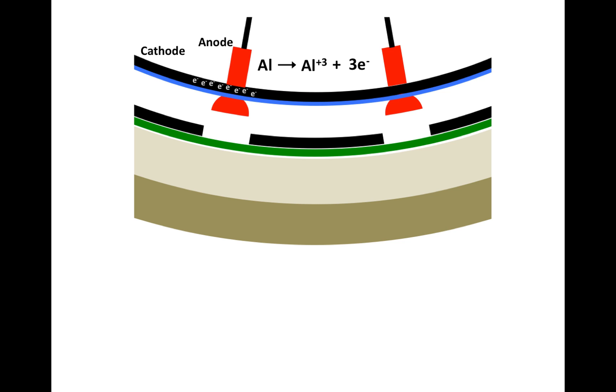So again, the reaction begins by electrons from the nipple, which is the anode, going into the rim, which is the cathode.